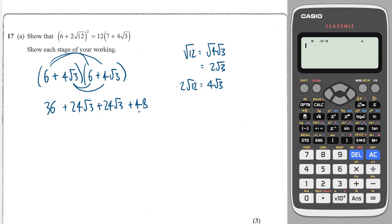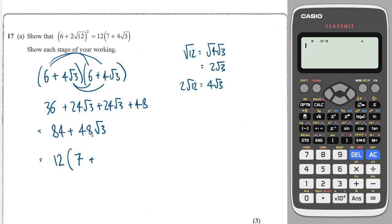36 plus 48 is 84. And 24 root 3 plus 24 root 3 is 48 root 3. So that is 12 lots — 84 divided by 12 is 7, and 48 divided by 12 is 4.